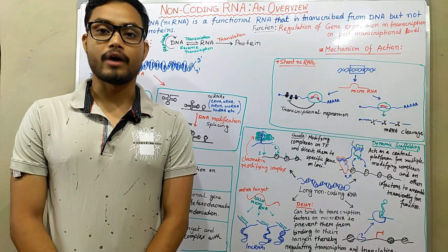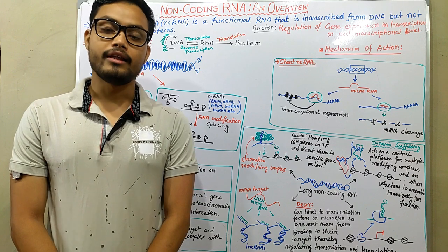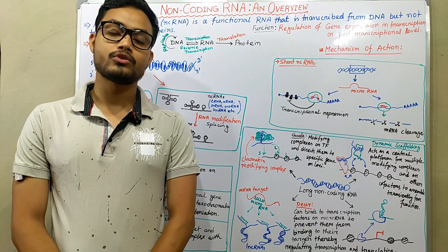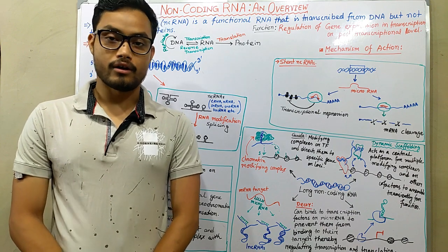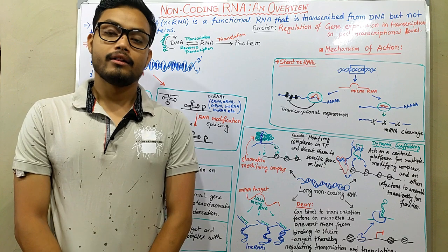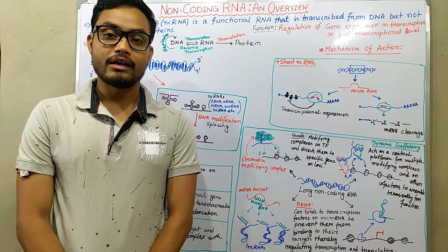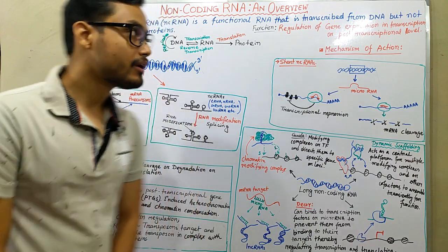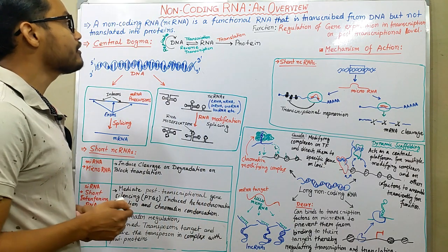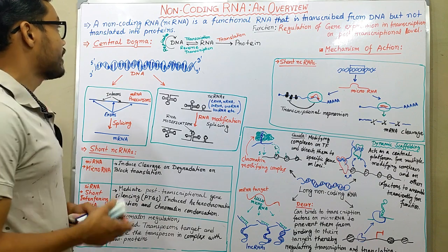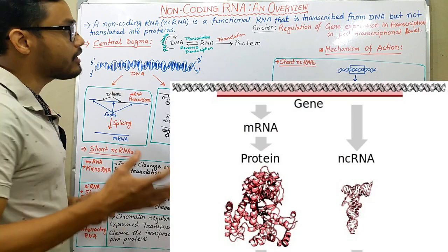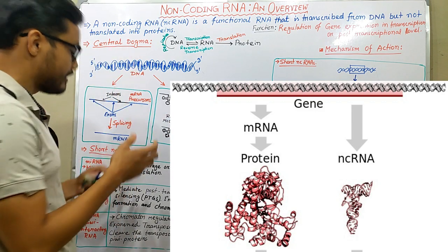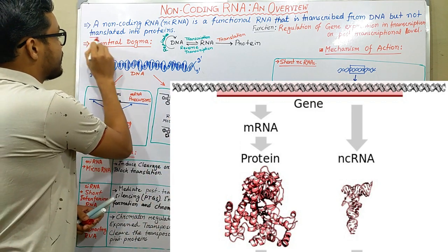Hello friends, welcome to Biology Concern. I am Animesh. In this video I'm going to discuss about non-coding RNAs — those RNAs that are crucial for our cellular responses and cellular activities but are not producing any kind of protein. The definition of non-coding RNA: a non-coding RNA or ncRNA is a functional RNA that is transcribed from DNA but not translated into proteins.